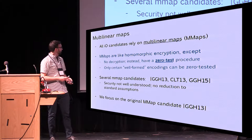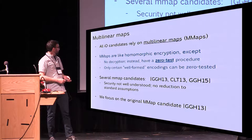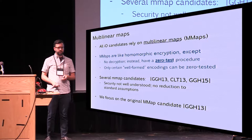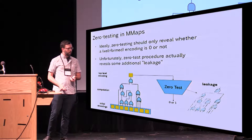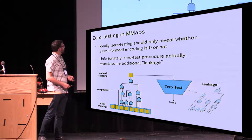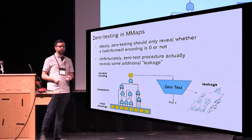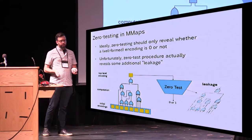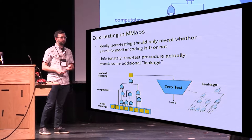We have several mmap candidates. In this talk, I'm going to focus on the first of these, which was the original candidate due to Garg, Gentry, and Halevi. Ideally, in these multilinear map candidates, zero tests should just reveal whether an encoding is zero or not. But in practice, all of the zero test procedures actually reveal some sort of leakage.